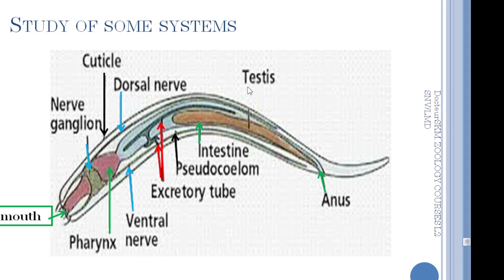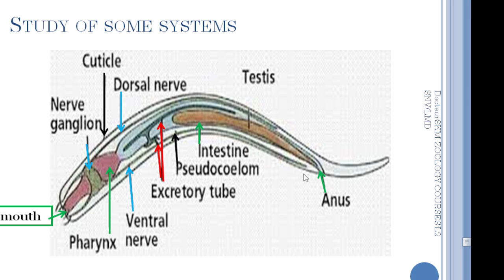Here is a picture showing several systems. The first is the nervous system — a very simple nervous system, because in the evolution we are still looking at simple animals. The nervous system is composed of a nerve ganglion ring, and from this ring depart two nerve cords: the dorsal nerve and the ventral nerve. It is a very simple system.